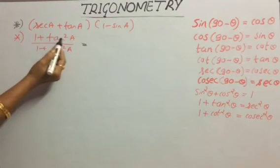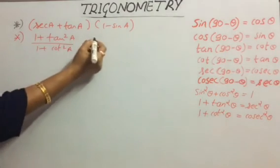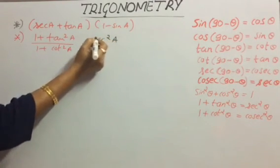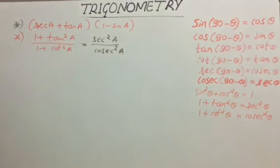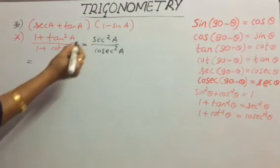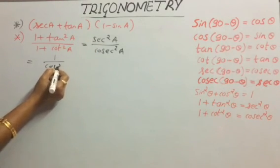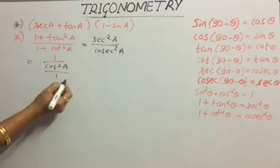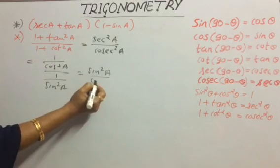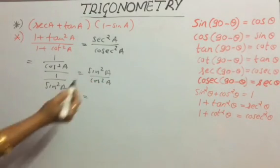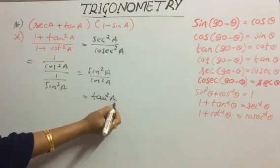Next expression: (1 + tan²A) / (1 + cot²A). Using identities, 1 + tan²A = sec²A and 1 + cot²A = cosec²A. Since sec = 1/cosA and cosec = 1/sinA, this becomes (1/cos²A) / (1/sin²A) = sin²A/cos²A = tan²A.